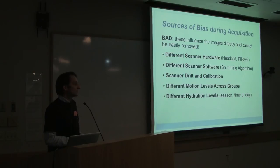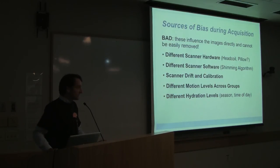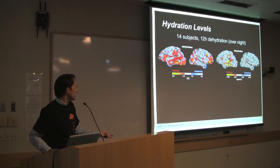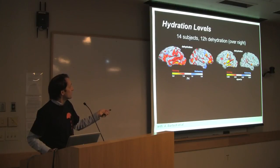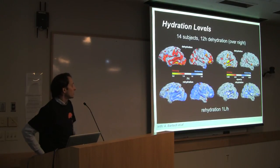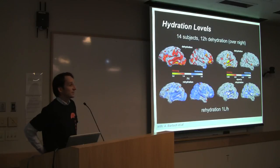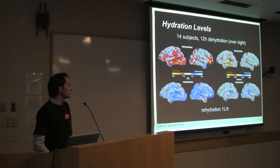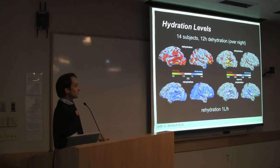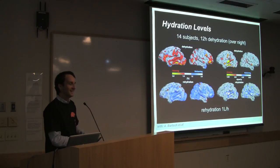Other confounds include motion differences across groups — Huntington's patients or older subjects move more, and motion can affect cortical thickness measurements in FreeSurfer, leading to apparently thinner cortices. Hydration level is also important: in a study with Andreas Barge, 14 subjects were dehydrated overnight for 12 hours, showing significant cortical thinning; then rehydrated for one hour during the scan session, showing significant thickening. The effect is up to 5%, so it may be important to control hydration — for example, giving subjects something to drink an hour before scanning.